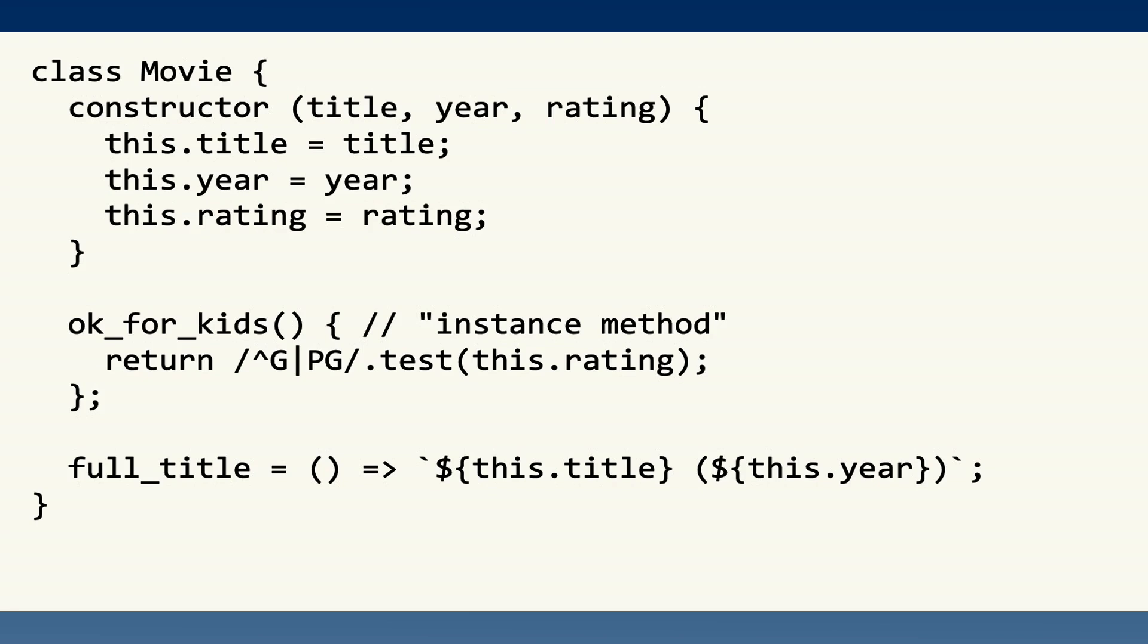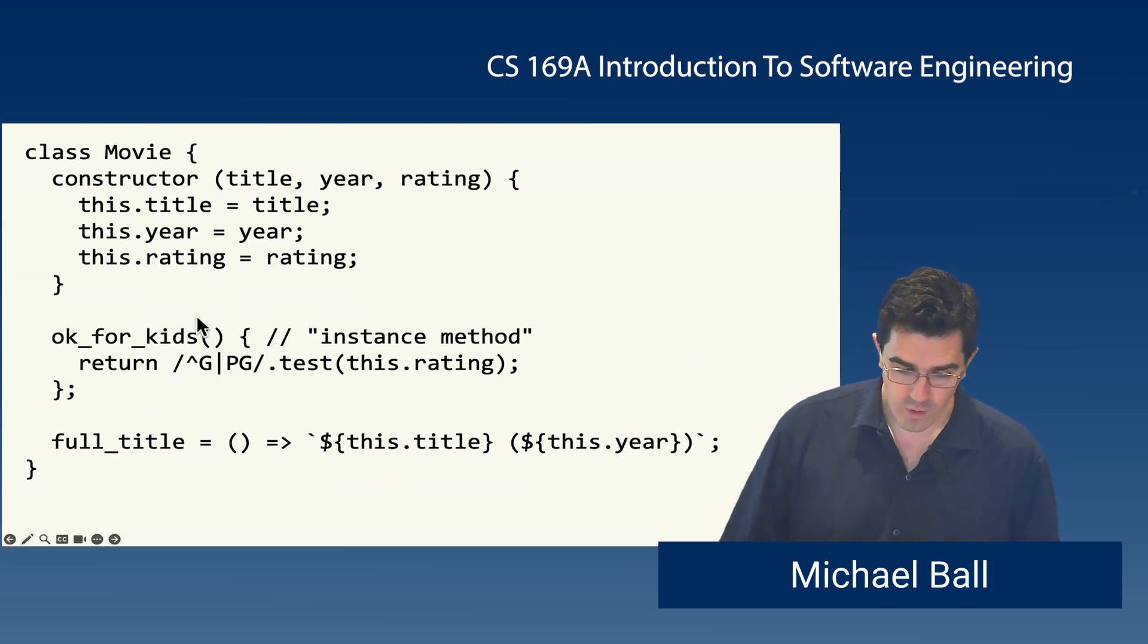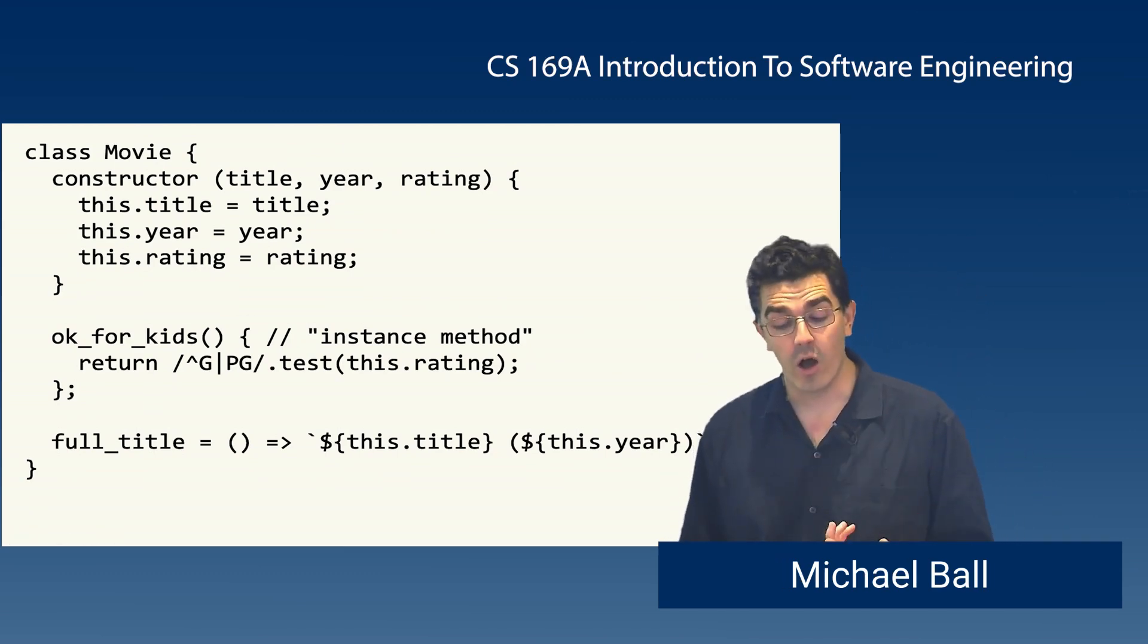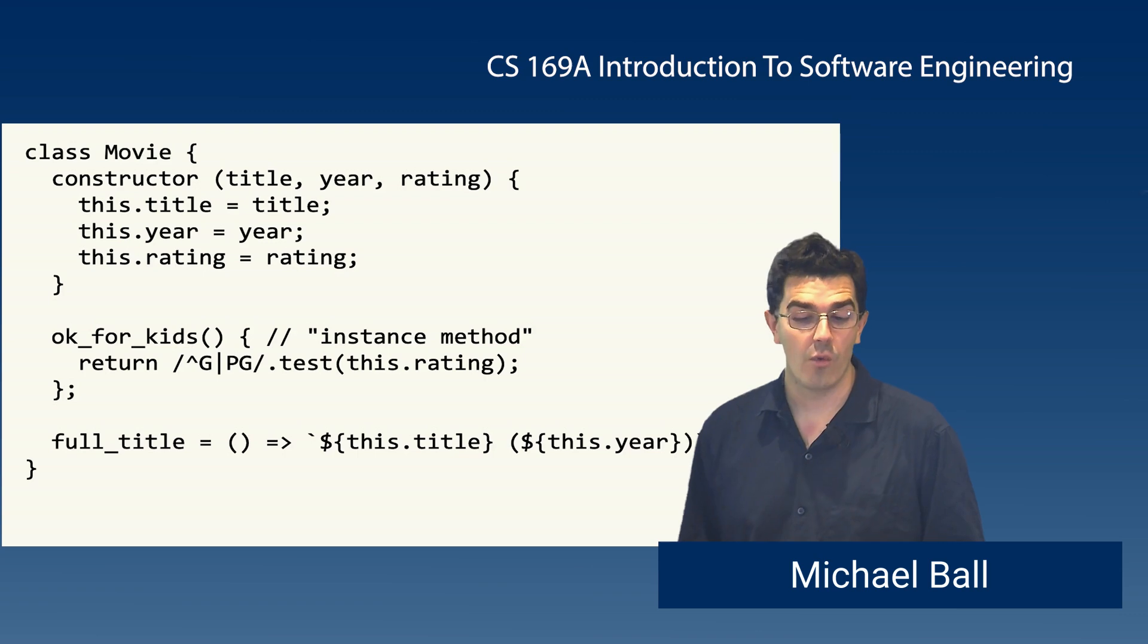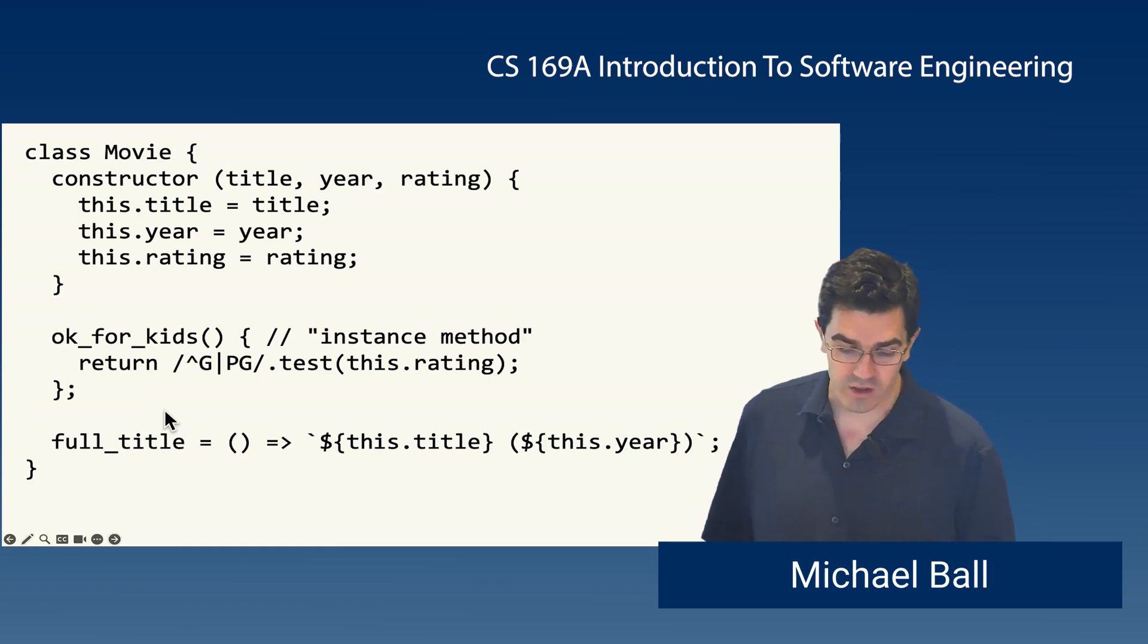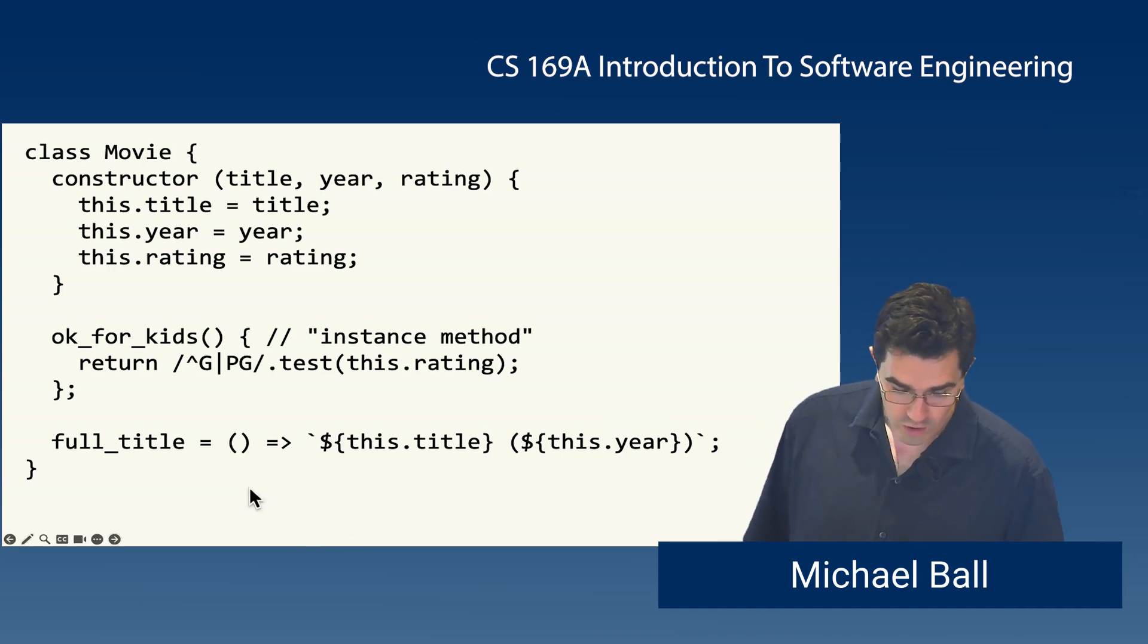It has a constructor which takes in a title, a year, and a rating. Properties on an object use this, so it's equivalent to Ruby's self. These are what we can sort of think of as instance attributes, and then we declare instance methods just as functions within our class definition. So I could have a function ok_for_kids or a function called full_title which accesses the other instance methods. Here I've written these functions two different ways. They work exactly the same way: a typical function which has a function name, curly braces, and returns some expression. This one happens to be using a regular expression.